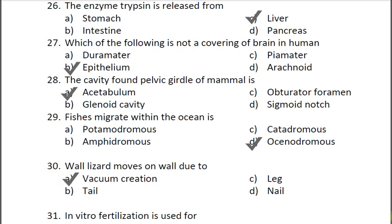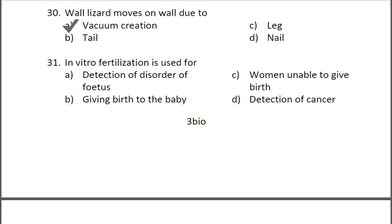Question thirty-one: In vitro fertilization is used for — A detection of disorders of fetus, B giving birth to a baby, C women unable to give birth, D detection of cancer. The correct answer is C. IVF is a series of procedures to help with infertility problems or problems associated with conception of a child.